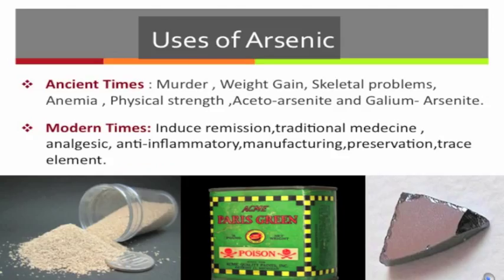Uses of Arsenic. Previously, arsenic has been used to commit murders because it resembles white sugar — it is odorless and tasteless. It has been used for weight gain because it enhances nutrient absorption, used to treat skeletal problems and anemia, and also used to increase physical strength.